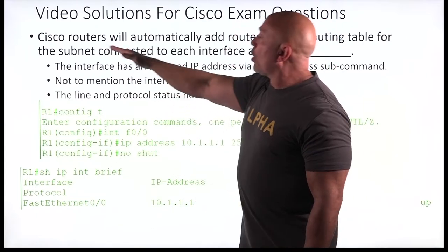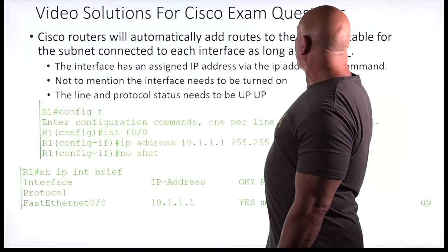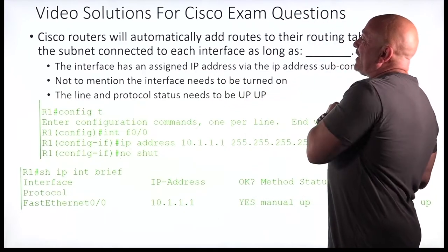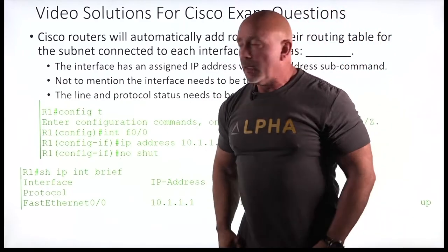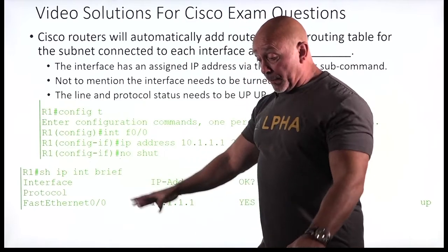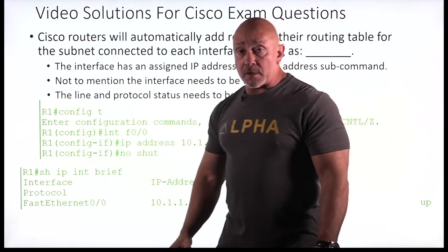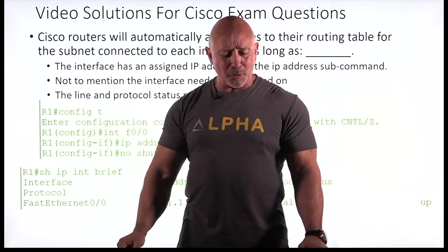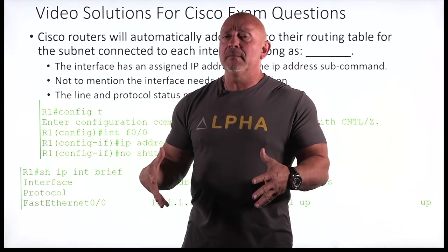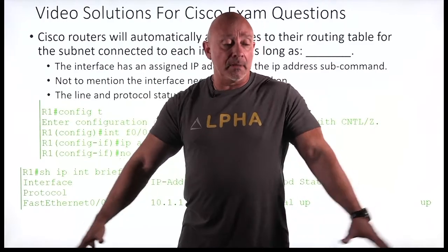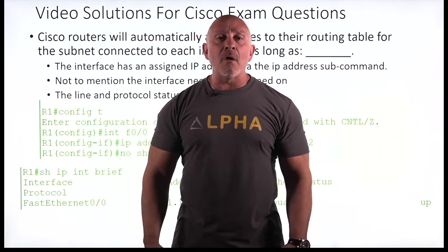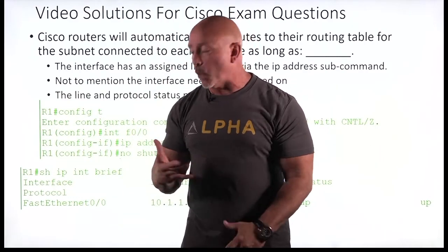So Cisco routers will automatically add routes to their routing table for the subnet connected to each interface — as long as what? They're going to add routes to their routing tables for subnets directly connected to them. The routers know who they're connected to, so how do they add those routes automatically? We didn't put it in — they just learned it because the router knows it's connected.